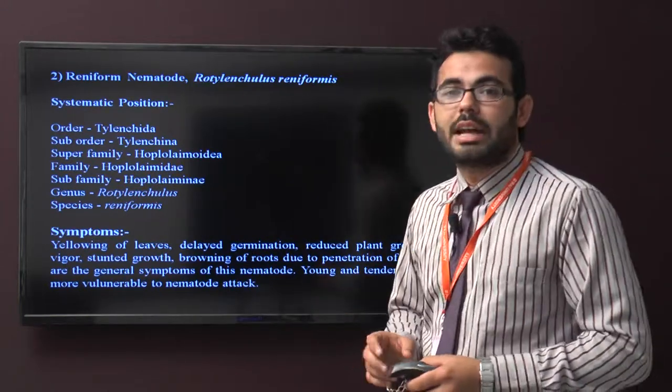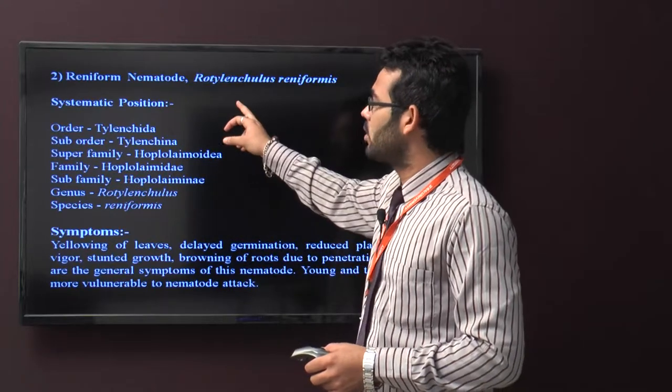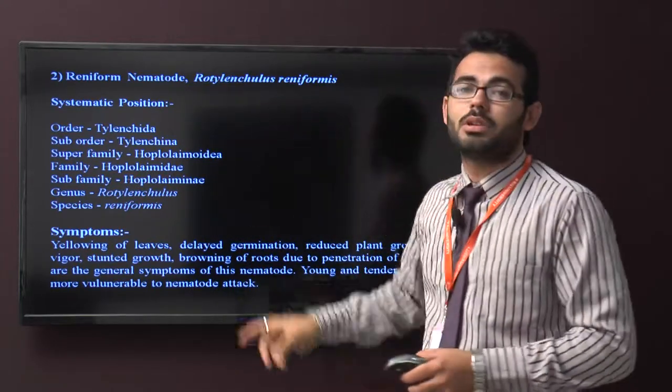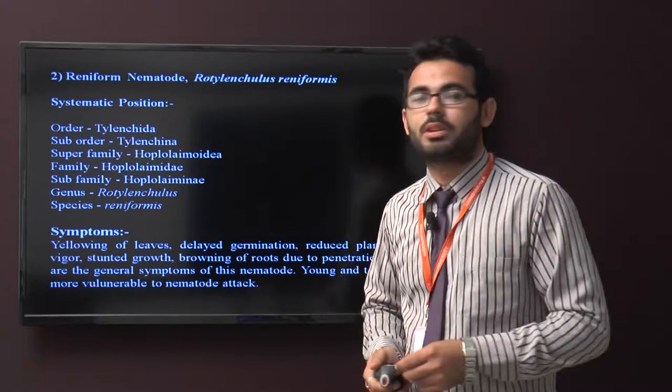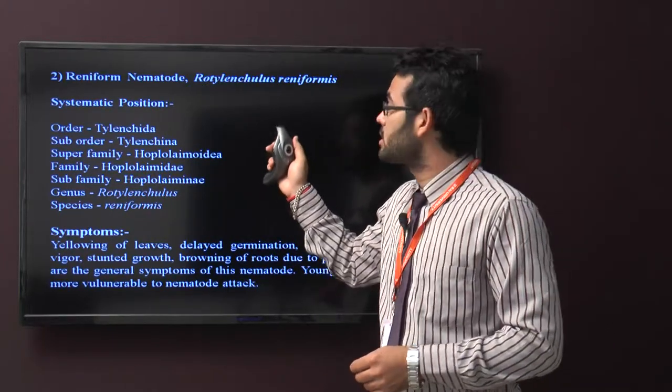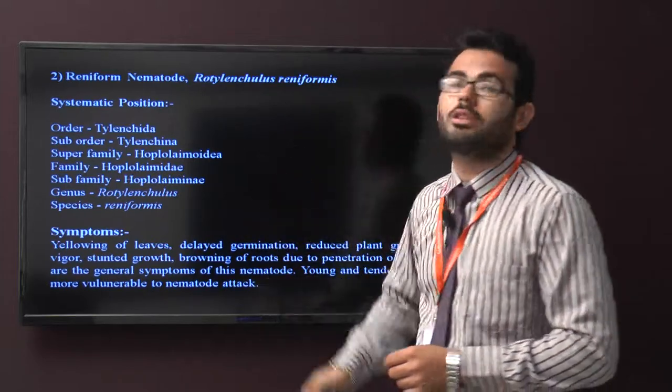Generally the scientific name first part, Rotylenchulus, is called genus and second part, reniformis, is called species. In all scientific names, first is genus and second is species.